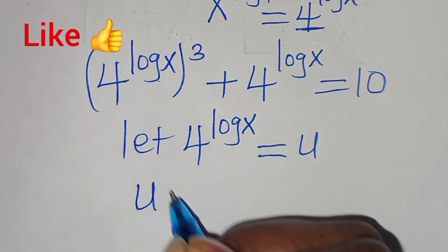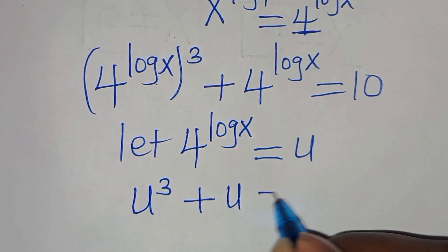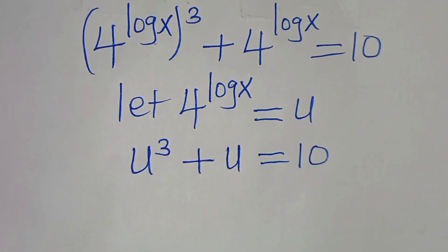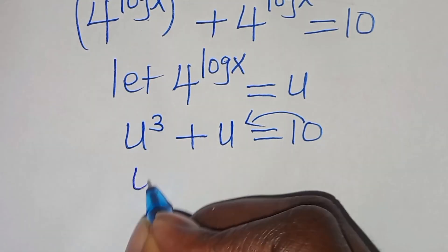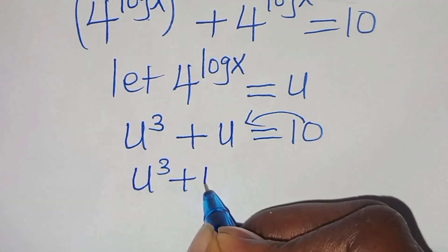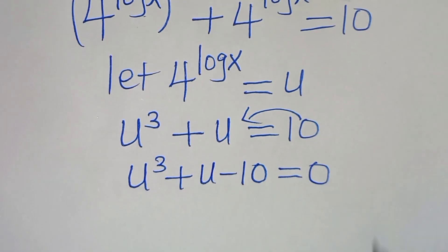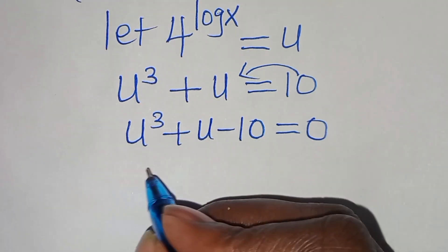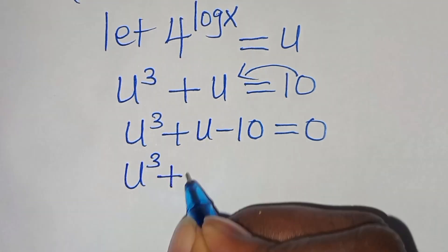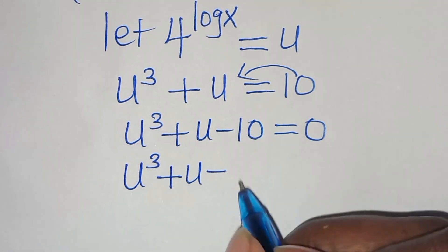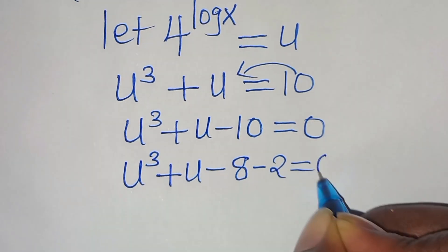With u = 4^(log x), the equation becomes u³ plus u equals 10. Taking 10 to the left-hand side gives us u³ plus u minus 10 equals zero. This cubic expression can be split as (u³ minus 8) plus (u minus 2) equals zero.